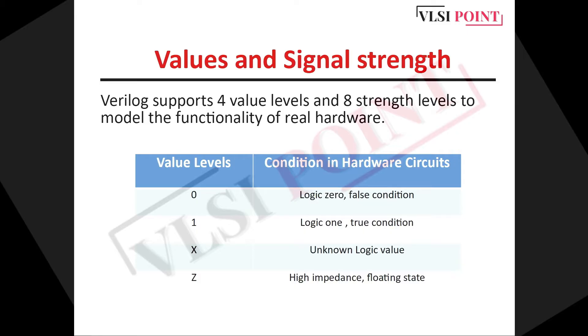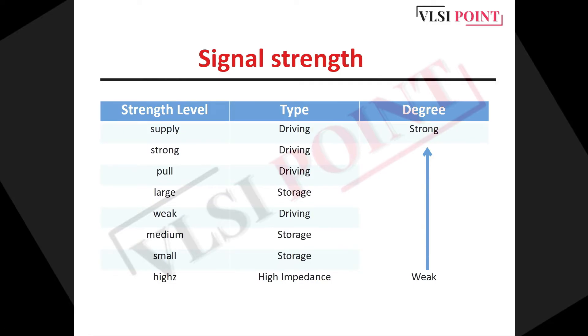Now talking about the strength levels. Verilog supports eight different strength levels. And these are supply, strong, pull, large, weak, medium, small and high Z. And here in this table, you can see the strength level is increasing from bottom level to top level. Means as we are moving from bottom to up, the strength level is increasing.